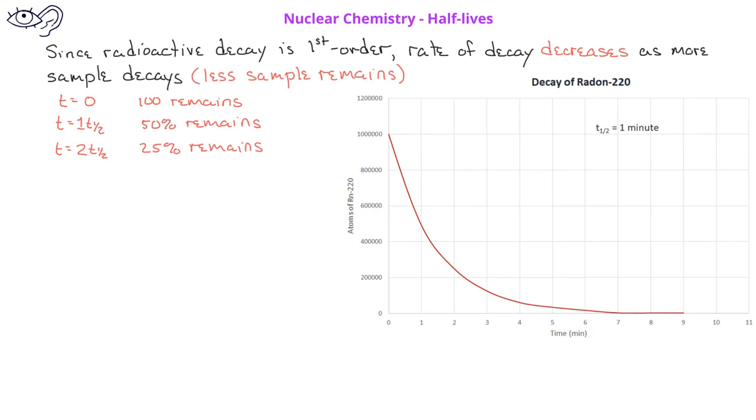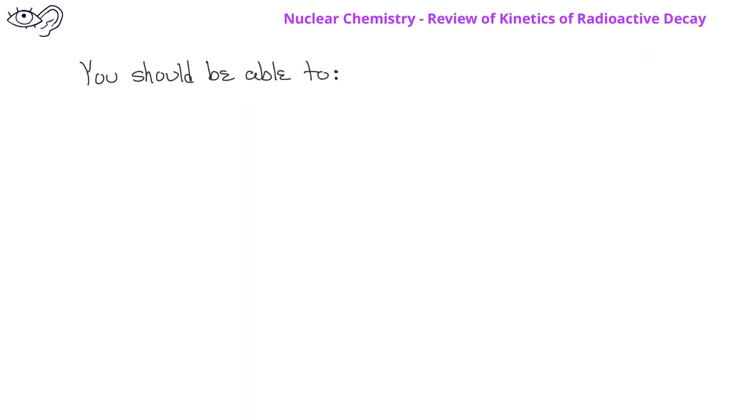Since radon-220 has a half-life of one minute, if we start with one million nuclei, there will be 500,000 nuclei remaining after one minute or one half-life. After two half-lives or two minutes, only 250,000 nuclei of radon-220 remain.